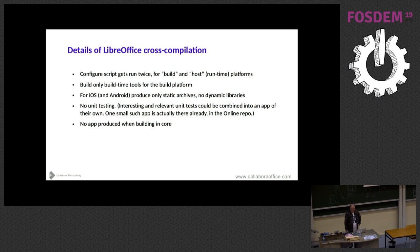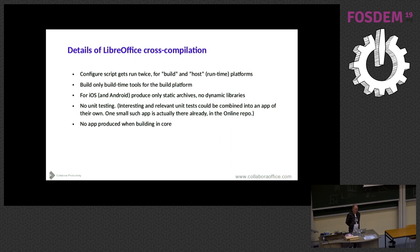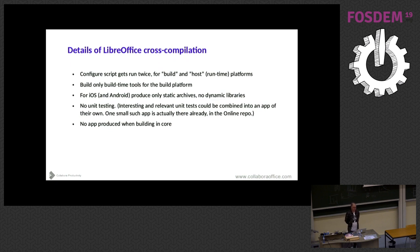Something about the cross-compilation of LibreOffice code: one basic thing is that we run the configure script twice automatically — once for the build platform and once for the target or host platform. For the build platform, that's macOS for iOS and Linux for Android. We only build the build-time tools necessary to process IDL files and generate code. When cross-compiling for iOS or Android, we don't build any dynamic libraries as we do for desktop platforms, but only static archives. The main reason originally was that on iOS you were not allowed to load your own dynamic libraries.